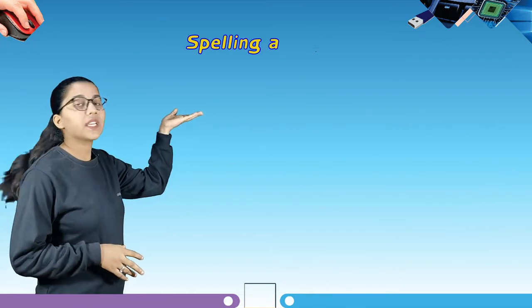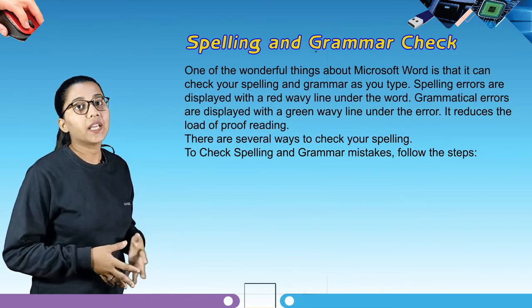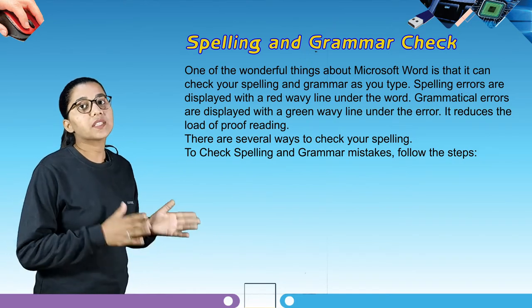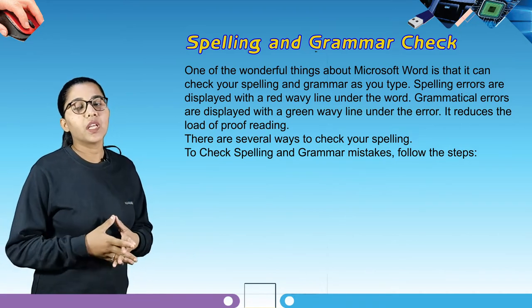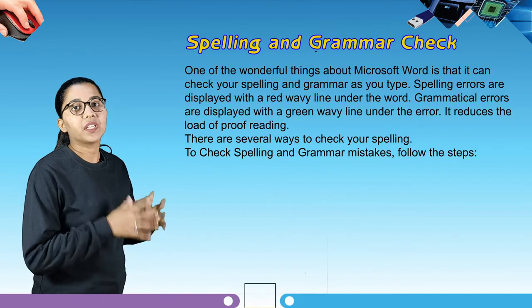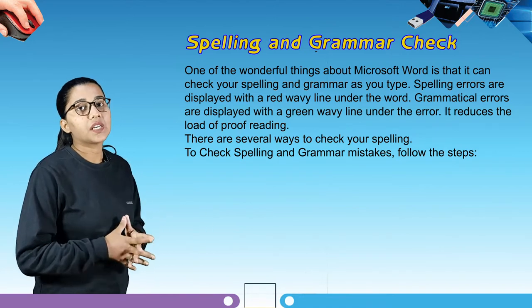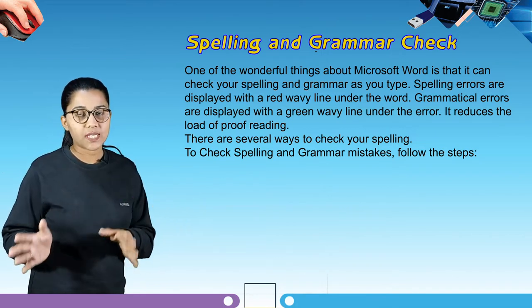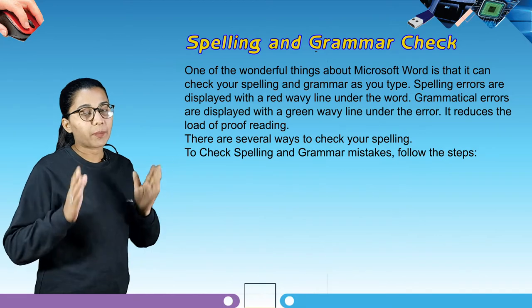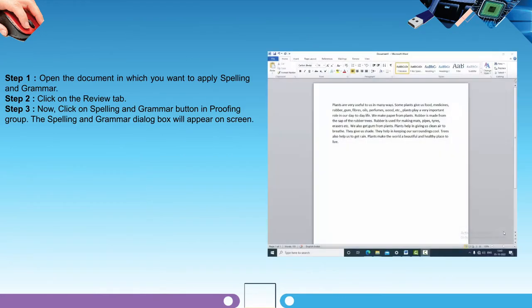Our next topic is spelling and grammar check. One of the wonderful things about Microsoft Word is that it can check your spelling and grammar as you type. Spelling errors are displayed with a red wavy line under the word. Grammatical errors are displayed with a green wavy line under the error. It reduces the load of proofreading. To check spelling and grammar mistakes, open the document in which you want to apply spelling and grammar.